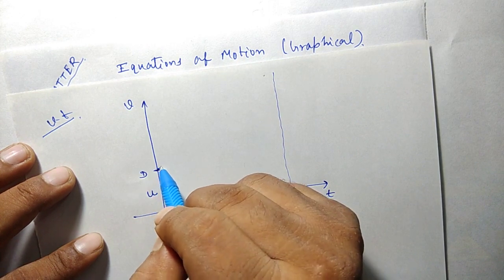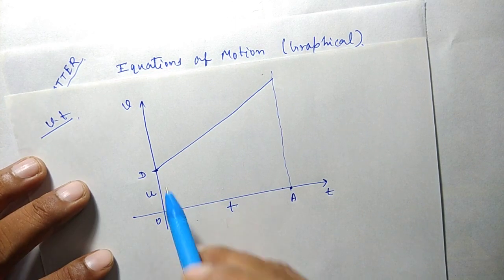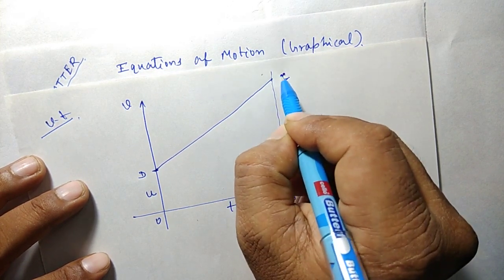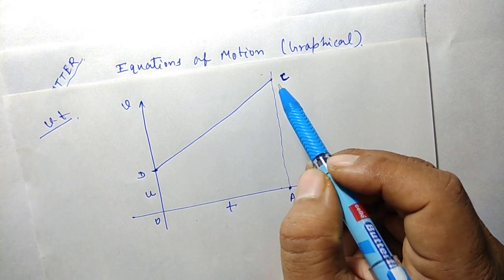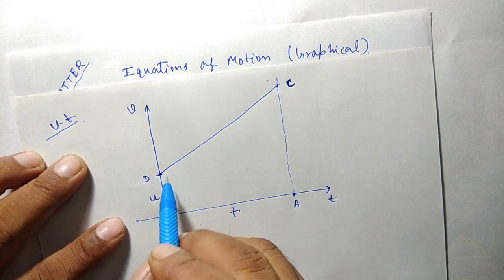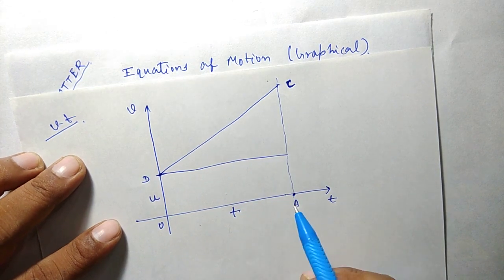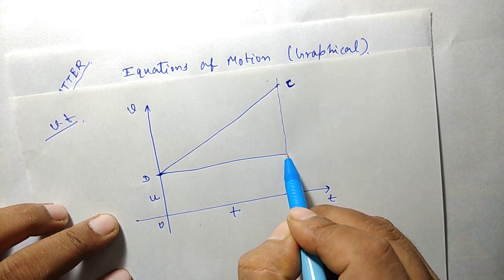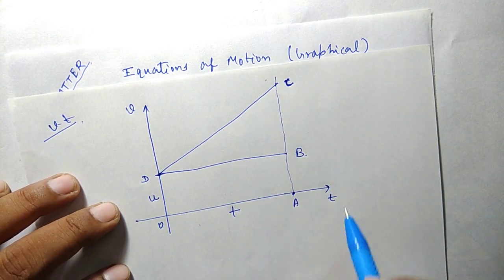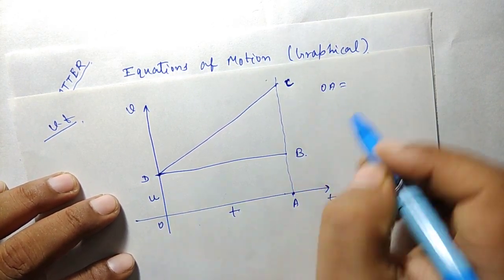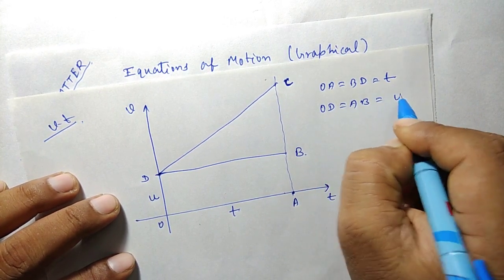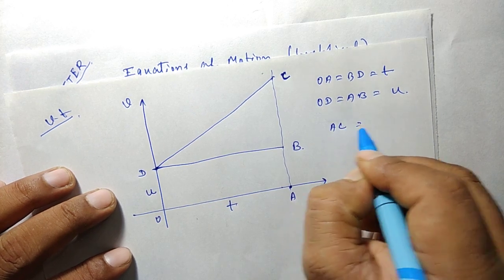The body started with a constant acceleration so the graph is a straight line — constantly the velocity is changing. This point is C, meaning after time t the body gains the velocity AC. We join point B which represents the uniform velocity level — if the body moved with uniform velocity all the time it would be a straight line parallel to the t-axis. So in the graph: OA equals BD equals t, OD equals AB equals u, and AC equals the final velocity v.